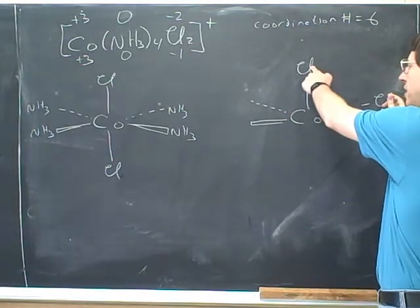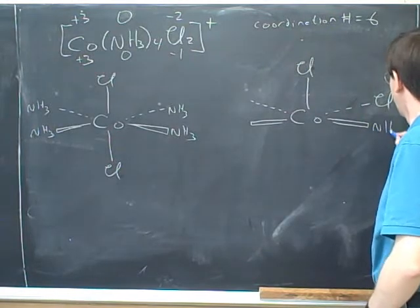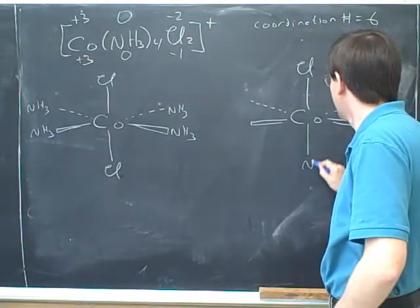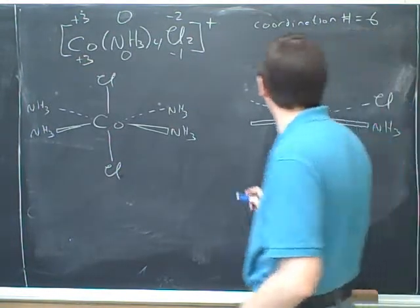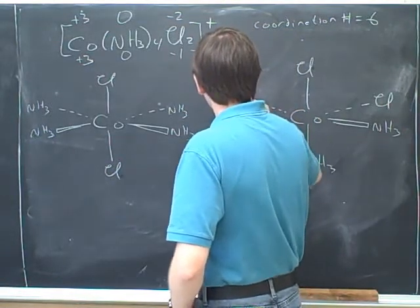What's the angle between these two chlorines? 90. It's a little bit hard to see, but they're at a 90 degree angle. That's right.